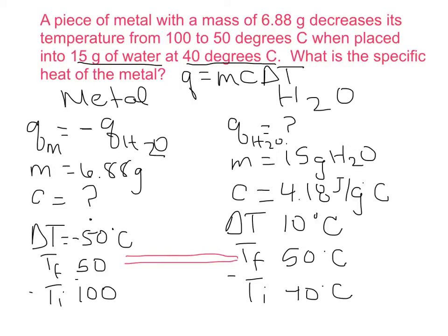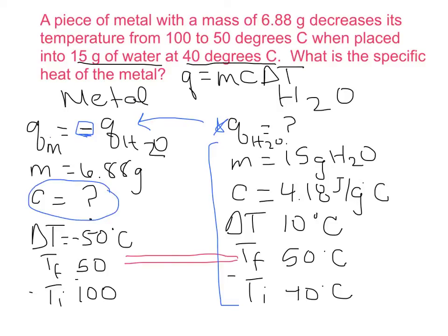The plan of attack is: first, calculate q of water using the known information. Then, use the relationship that q of water equals the opposite sign of q of metal to find q of metal. Finally, rearrange q equals mc delta T to solve for c, the specific heat of the metal.